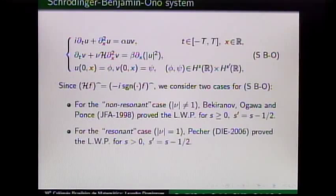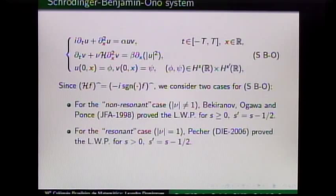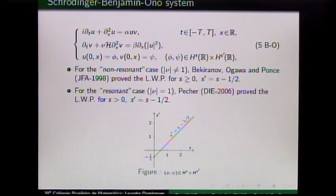So there is no cancellation in the interaction of the frequency for the non-resonant case. Becheranova-Gawa and Pons proved that the Cauchy problem for the system is locally well-posed for initial data with regularities S and S prime satisfying S greater or equal zero and S prime equals S minus one-half. For the resonant case, Pescher in 2006 proved local well-posedness for the same regularity except for the endpoint in this half-line. These two results are the starting point for our work. Our proposal was to investigate what happened with the Cauchy problem for regularities outside this half-line.